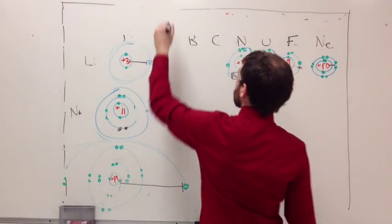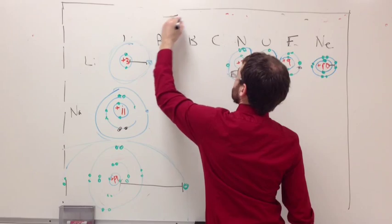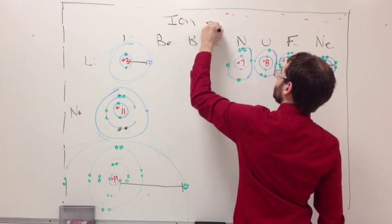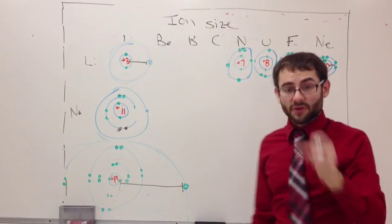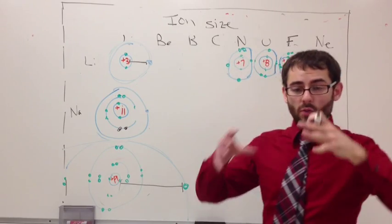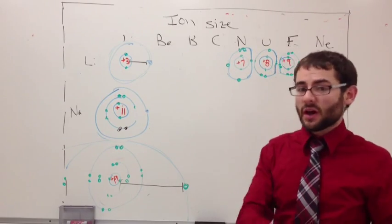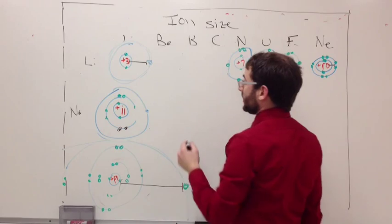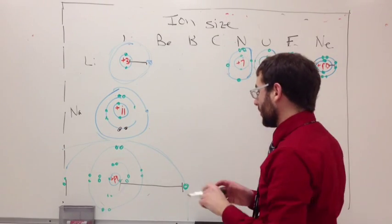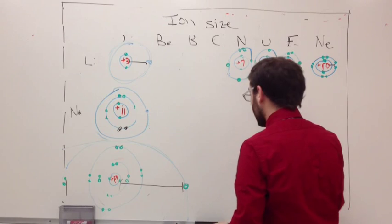The next trend I want to talk about is ion size, which I kind of talked about in the last one. For this, you're only going to compare one atom to its specific ion. So for example, we'll do the lithium example again, this time only talking about its size, so that might make it easier to follow.